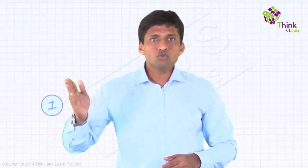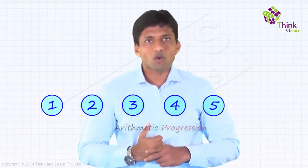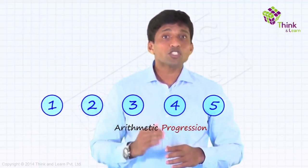So here, 1, 2, 3, 4 and so on. This is an arithmetic progression. Because I told you, arithmetic progression is a very simple pattern where we keep on adding the same number again and again.